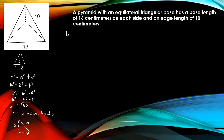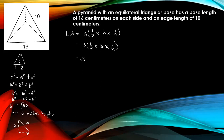To get the lateral area, now that we have the slant height, the lateral area equals 3 times one-half times the base times the slant height, since it is a triangular pyramid with 3 faces. So lateral area equals 3 times one-half times 16 times 6. One-half times 16 times 6 is 48, and 3 times 48 equals 144 square units.